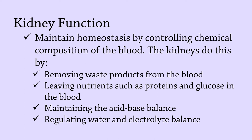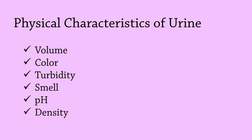Therefore, if the kidneys are functioning properly and the person is in good overall health, urine will be normal. The following are the physical characteristics that can be applied to urine: volume, color, turbidity or transparency, smell or odor, pH, and density. Many of these characteristics are identifiable by vision alone, but some require laboratory testing.